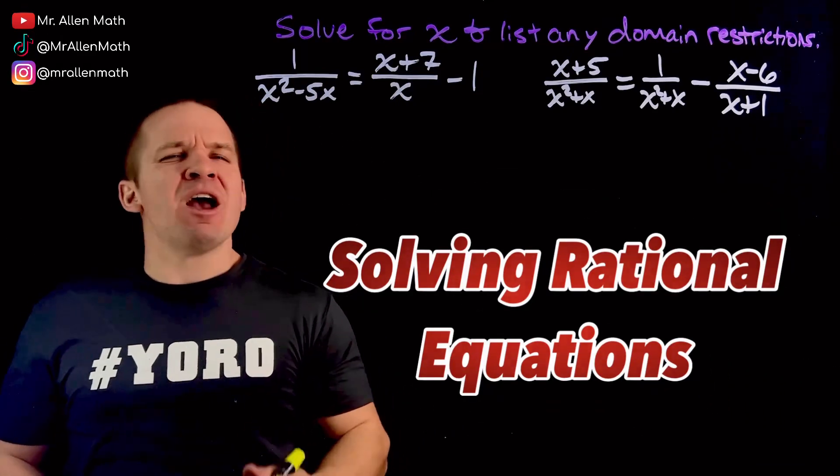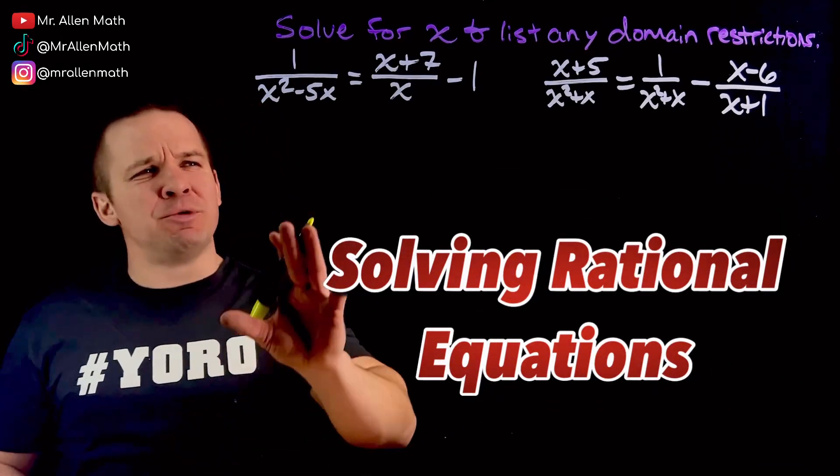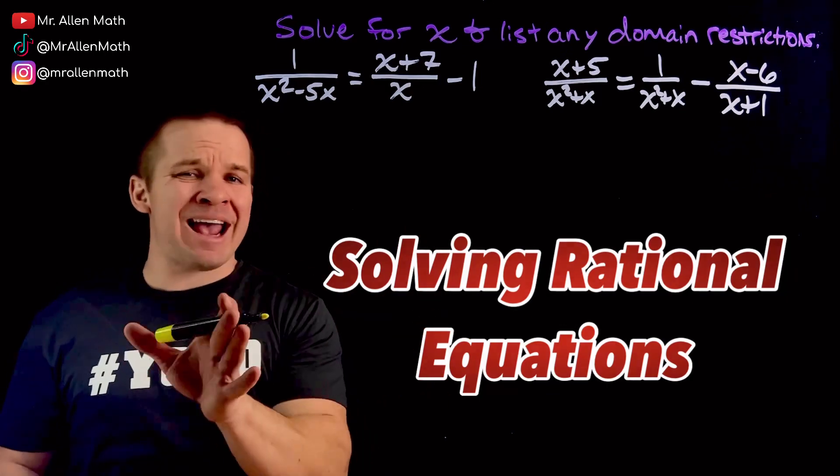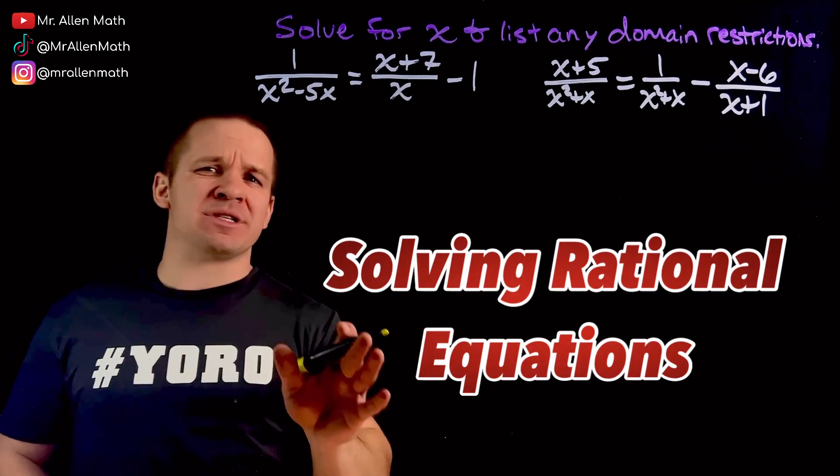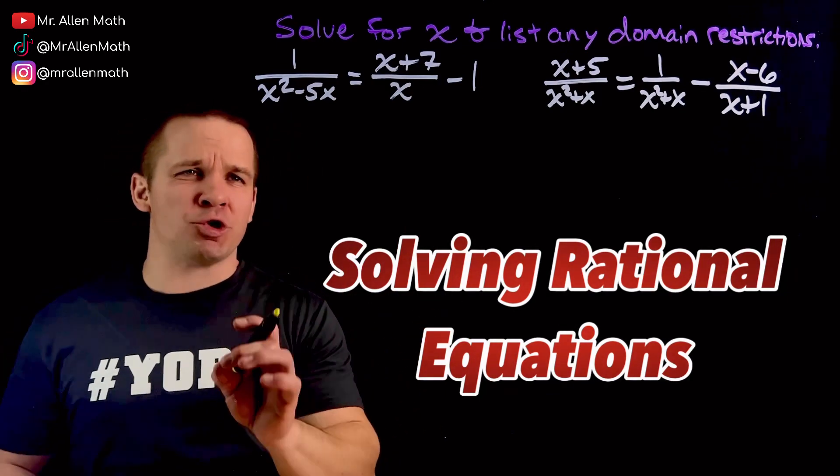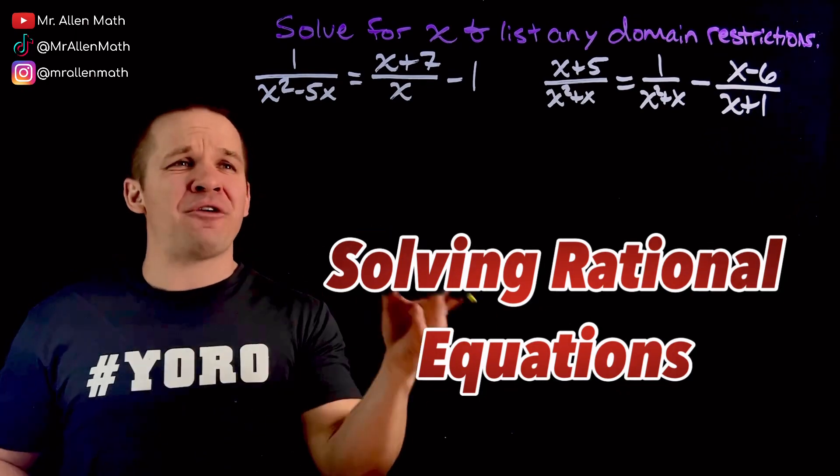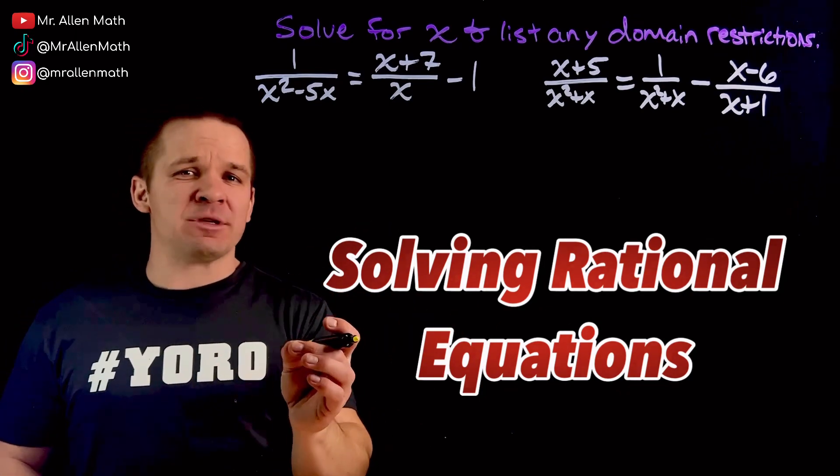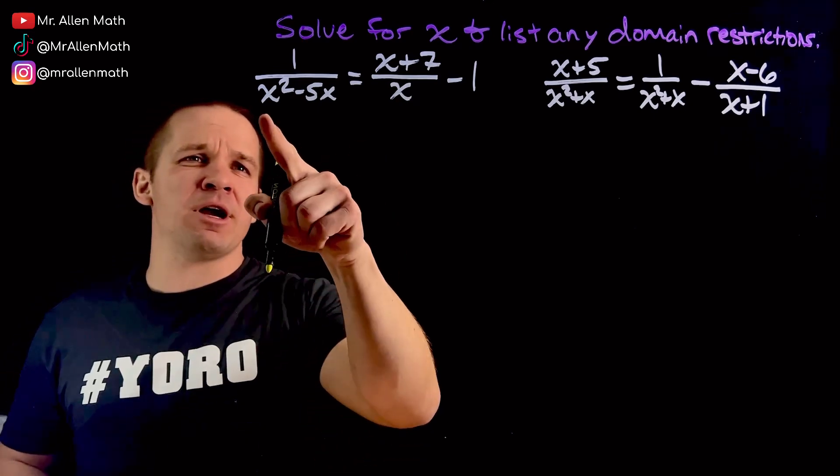What's happening, dogs? Mr. Ranlon here. We're about to solve for x in these beautiful rational equations here, and we're going to list domain restrictions. It's easiest to find those domain restrictions once we have our denominators factored, and it's also going to help us find our LCD. So let's do that in this first one here.